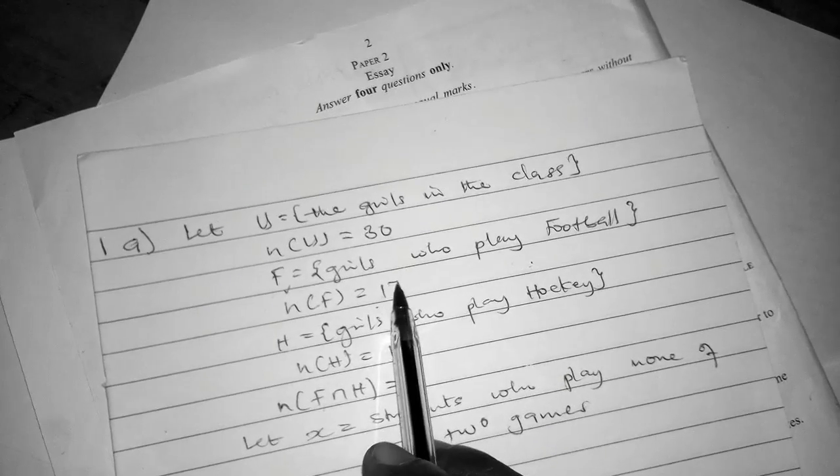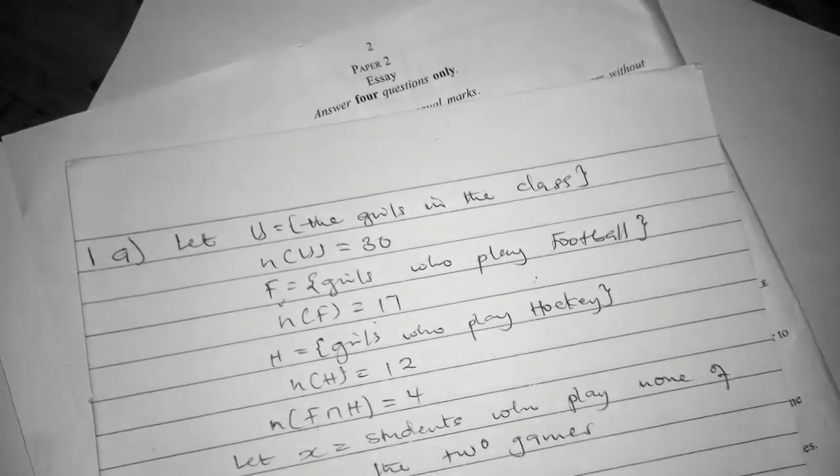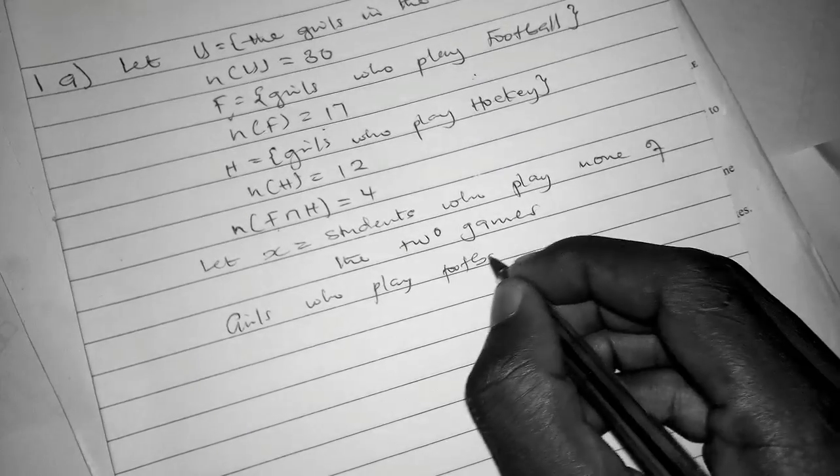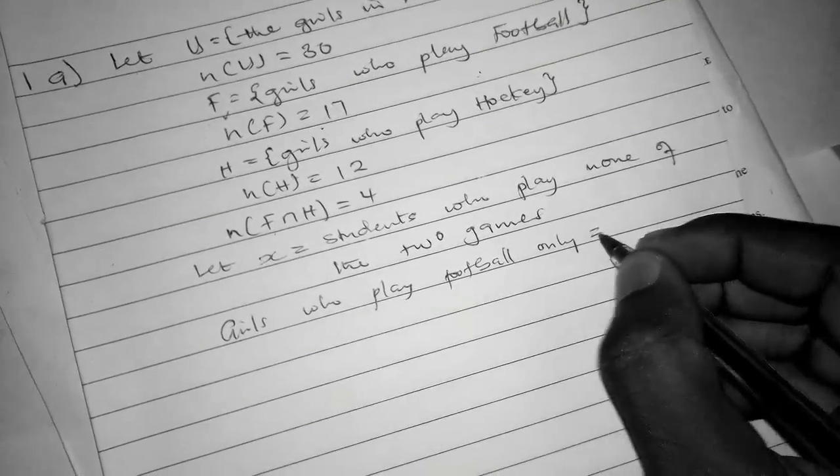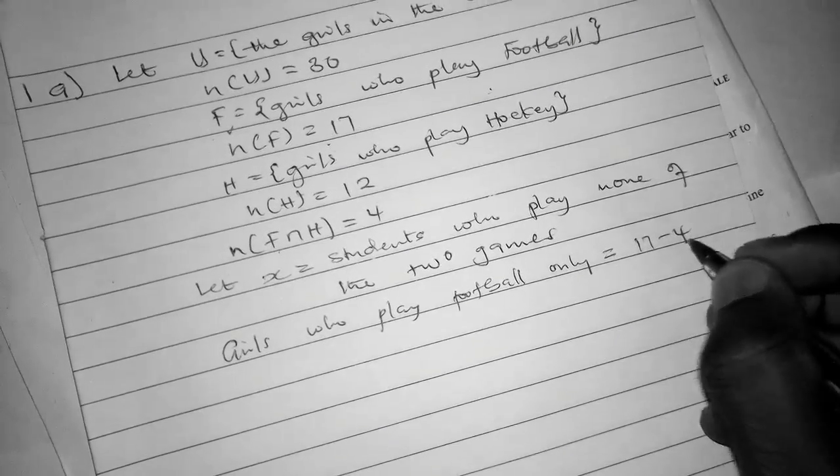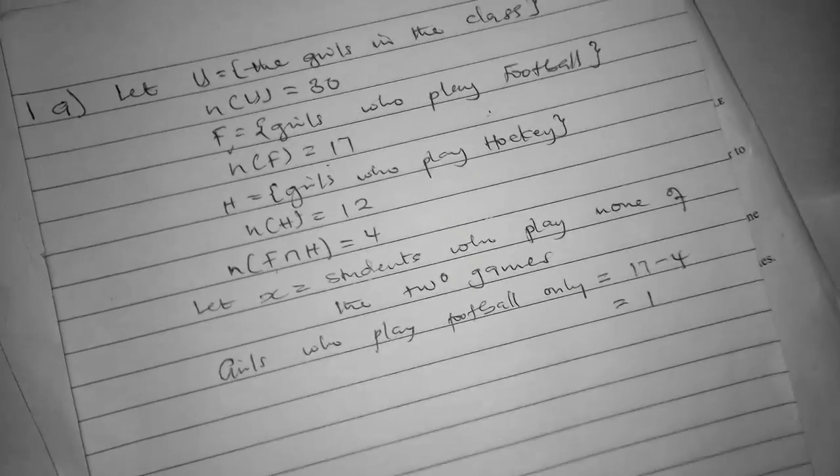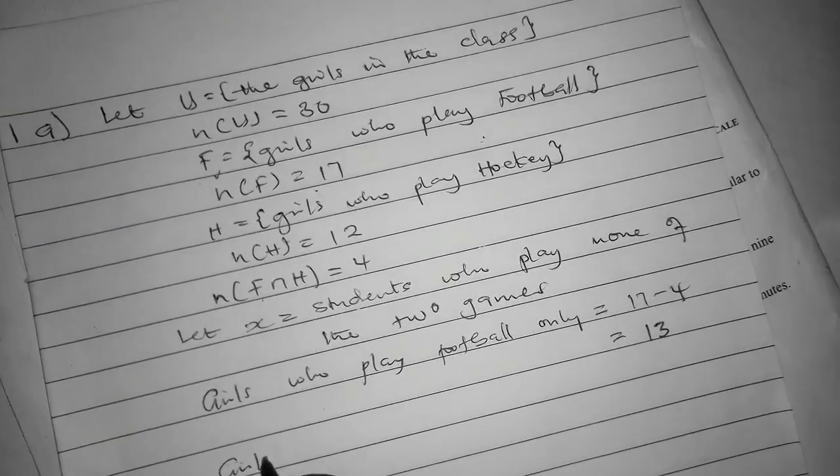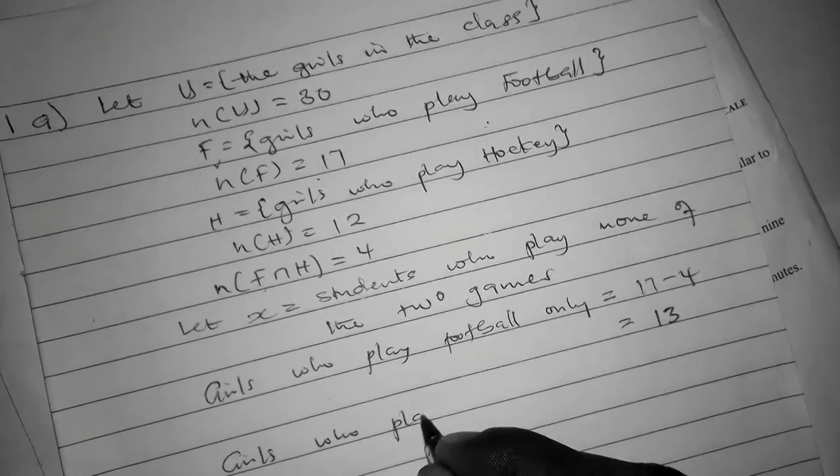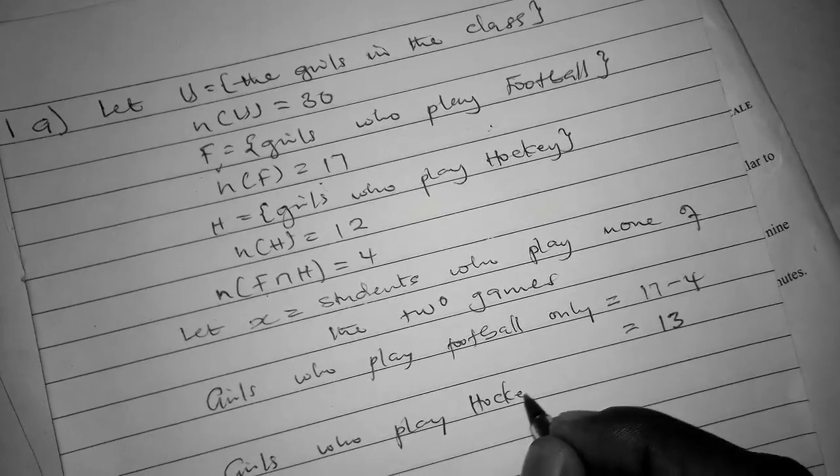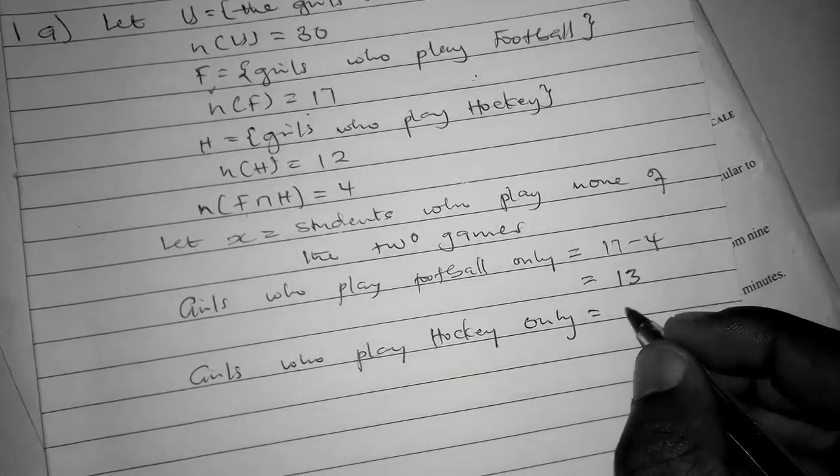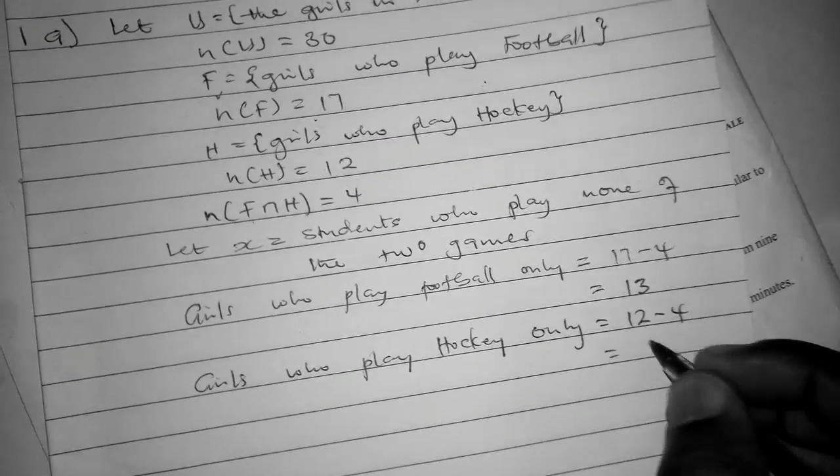Girls who play football only = 17 - 4 = 13. And girls who play hockey only = 12 - 4 = 8.